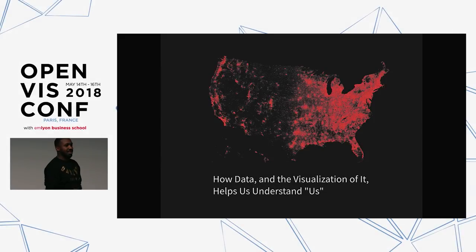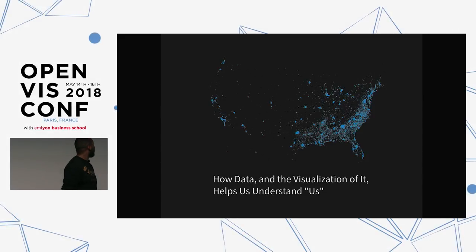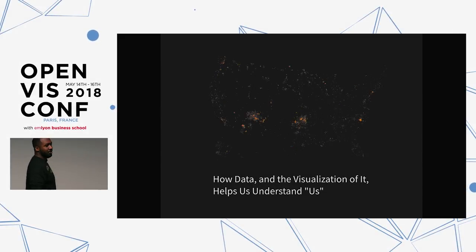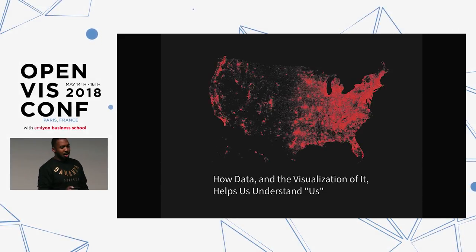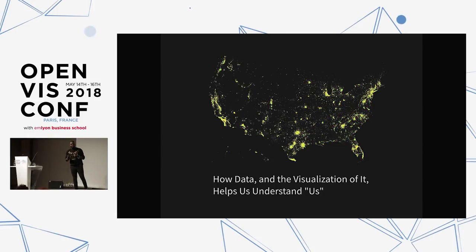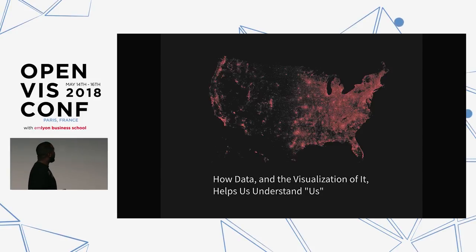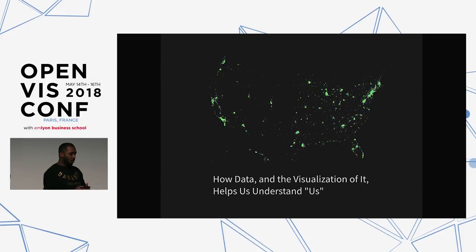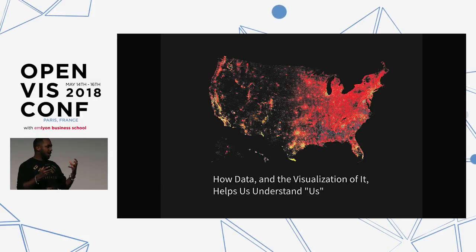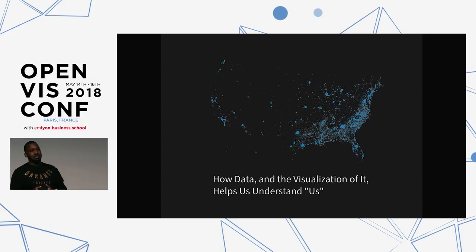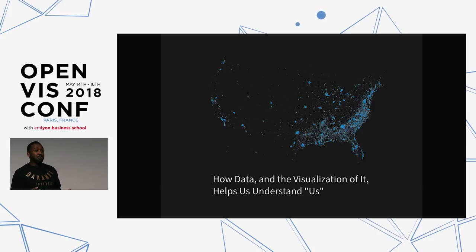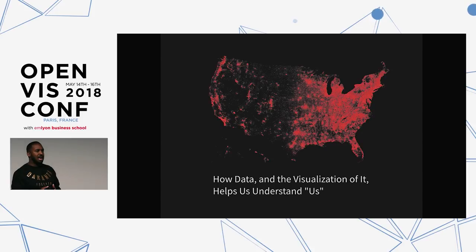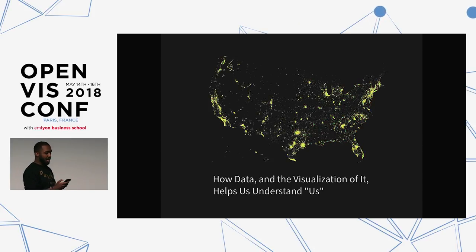Hi everyone, I'm Aaron Williams, reporter at the Washington Post, and I'm here to talk to you about visualizing data in race. The idea I want to walk you through today is how in the United States we've looked at race data over the last 100 or so years, how it's been visualized, and the implications of that.